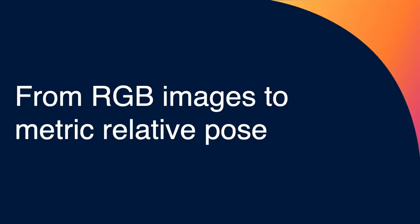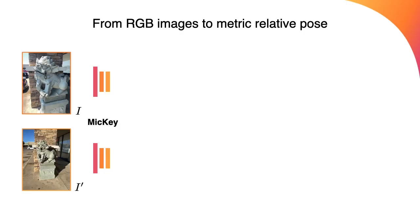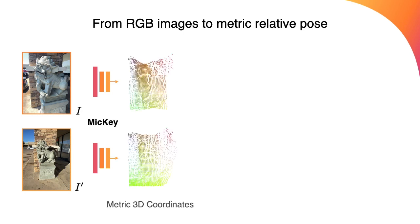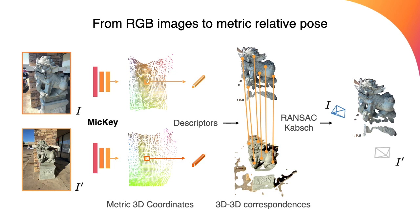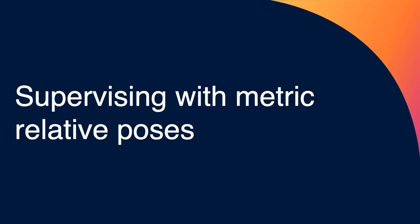So let's see how we go from RGB images to a metric relative pose. MICI takes two input images independently, and for each image MICI computes its 3D coordinates in a metric space. Every 3D coordinate has its associated descriptor, which we can use to compute correspondences between the keypoints. We use correspondences in a RANSAC loop with a CAPT solver and obtain the relative pose between the images. Because the 3D coordinates are in a metric space, our relative poses are too.